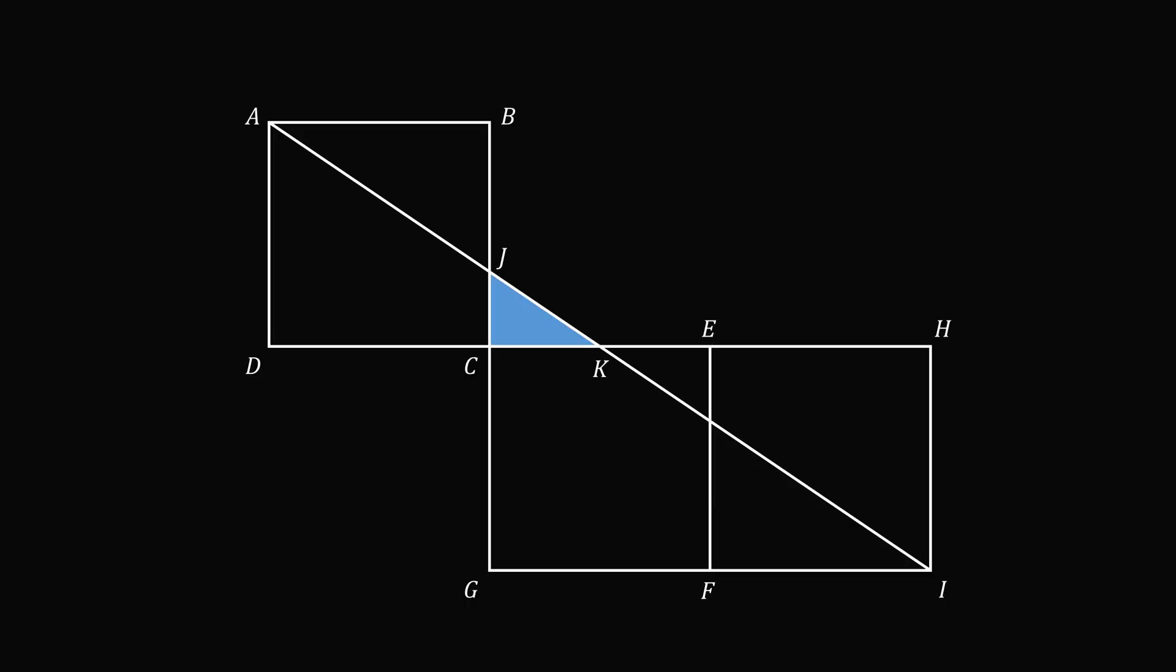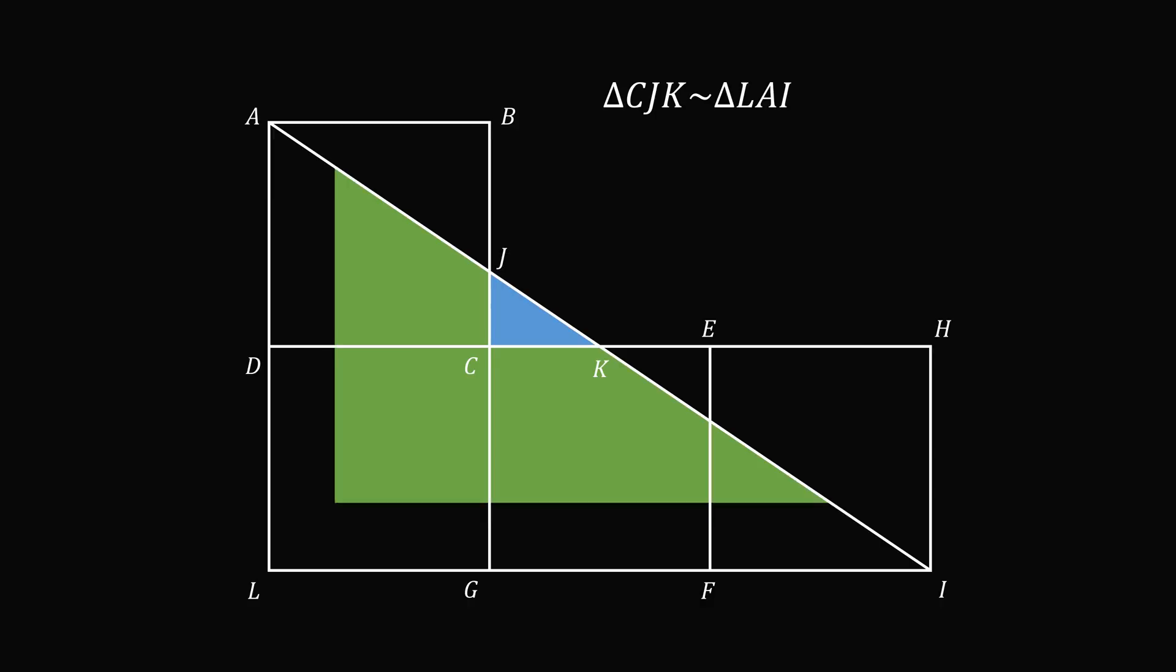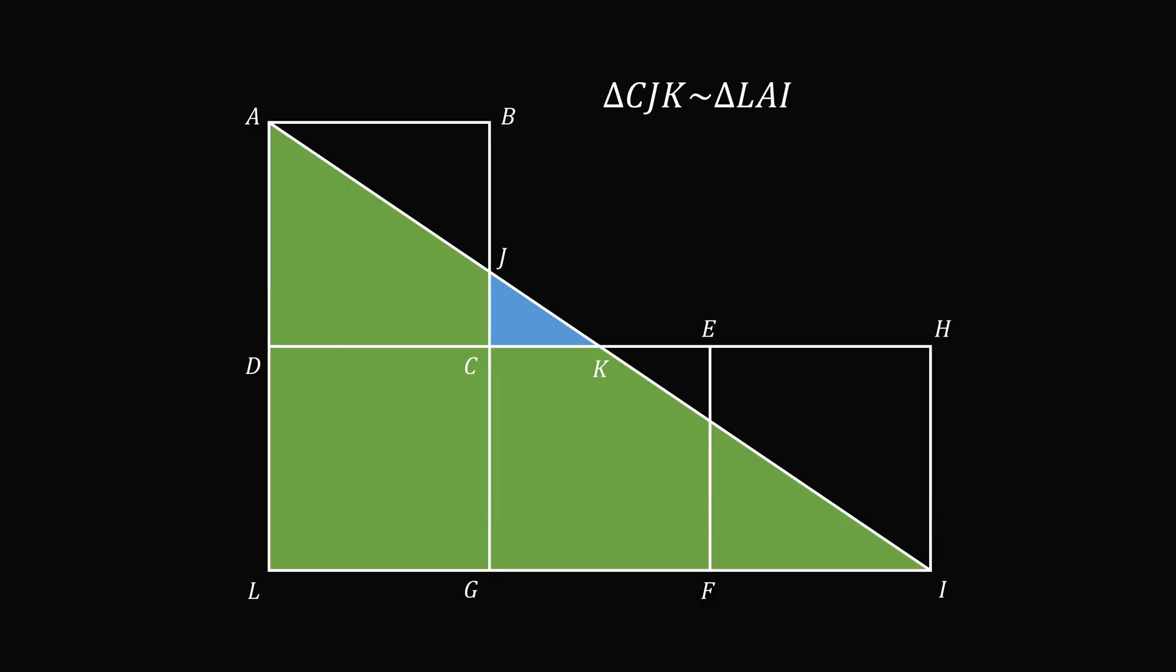There are many ways to work this out. Here is one method. Construct another identical square DCGL. Now, triangle CJK is similar to triangle LAI. Furthermore, triangle CJK and LAI are similar to triangle DAK.